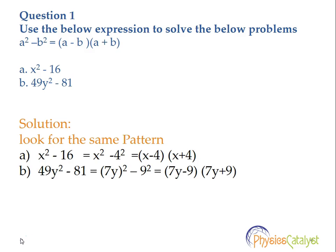Now let's take a look at the solution. We need to use our identity which is a squared minus b squared is equal to a minus b into a plus b. We need to look for the same pattern, that is we need to find a and b. So x squared minus 16 can be written as x squared minus 4 squared. Here a is equal to x and b is equal to 4, so we can write it as x minus 4 into x plus 4.